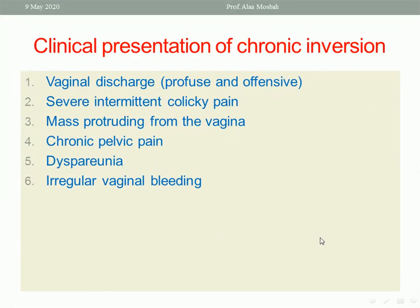For chronic inversion, the clinical presentation: the patient usually presents with vaginal discharge — which may be offensive, profuse, watery, or purulent — and a mass protruding from the vagina. There is also severe intermittent colicky pain, sometimes becoming chronic pelvic pain and dyspareunia, irregular vaginal bleeding, and if she is of childbearing age, she may also complain of inability to conceive.